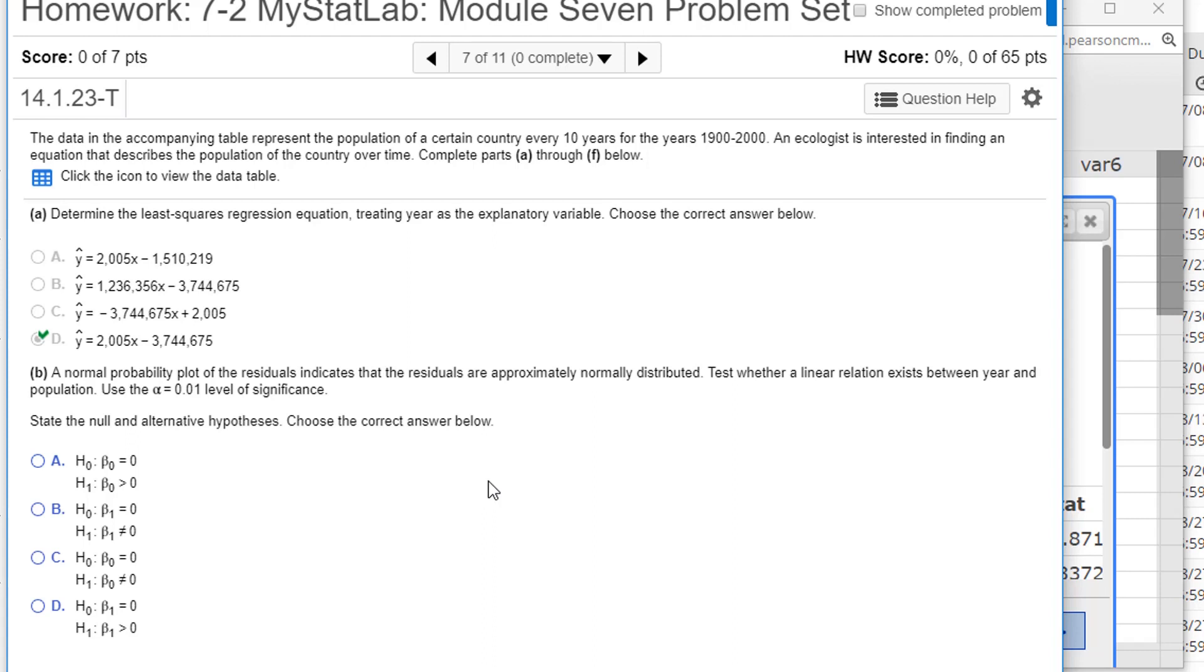A normal probability plot of the residuals indicates the residuals are approximately normally distributed. Test whether a linear relation exists between year and population at the alpha equals 0.01 level of significance. When we are doing this test, the null hypothesis is that the slope is zero, which is to say that the explanatory variable x has no significant impact on the population. The alternative is that it's not equal to zero, that the slope is non-zero and matters significantly. Beta zero is the intercept, beta one is the slope. So we're going to use H not: beta one equals zero, and beta one not equal to zero is the alternative.